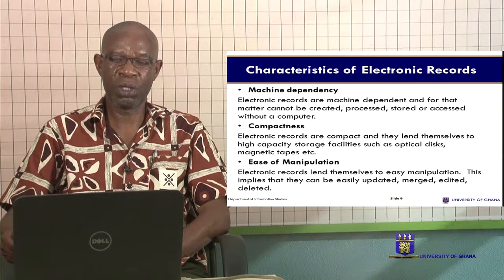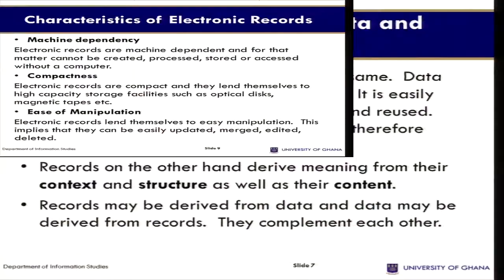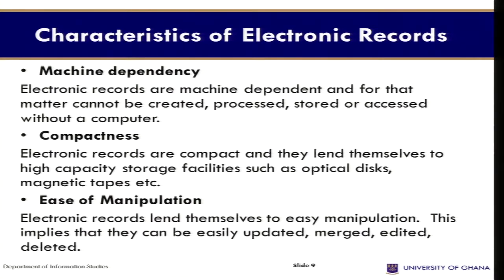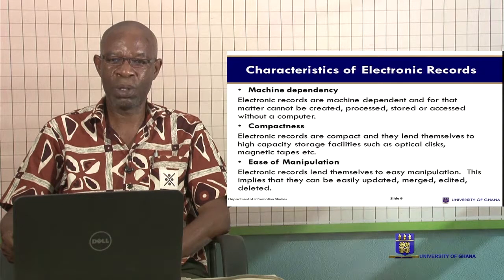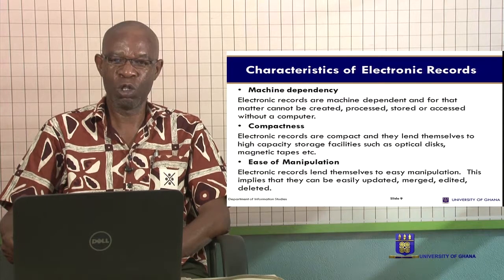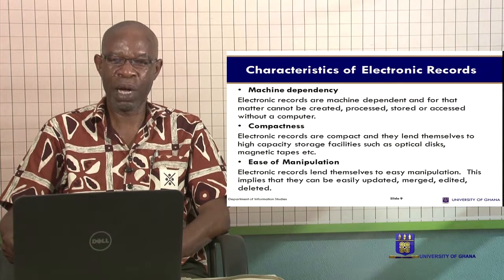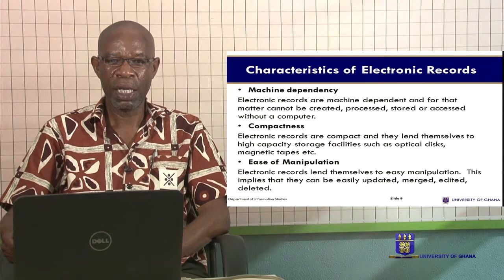The characteristics of electronic records: They are machine dependent, meaning that to use them, you need machines — you cannot create, store or access them without a computer. They are compact and lend themselves to high capacity storage facilities such as optical discs and magnetic tapes. You can take a CD or a pen drive — small as it is, very compact, but it has a lot of space to store a lot of information. What you find in a pen drive, if you were to print it out, you'd print many sheets or pages, yet you can hide it in your palm and it will not be seen.